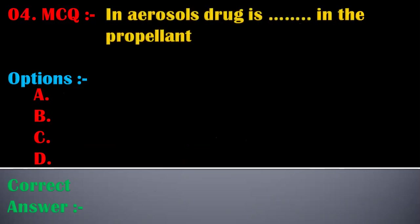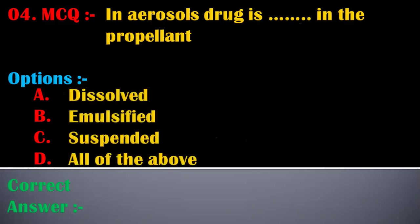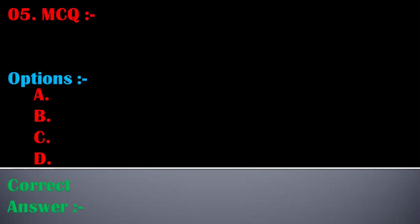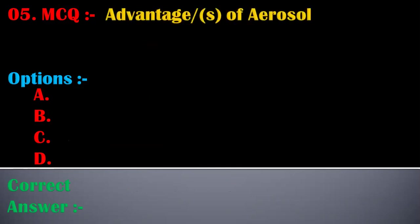The fourth MCQ is: in aerosols, the drug is __ in the propellant. Options are: A) dissolved, B) emulsified, C) suspended, D) all of the above. The correct answer is D, all of the above. In aerosols, the drug is either dissolved, emulsified, or suspended in the propellant.